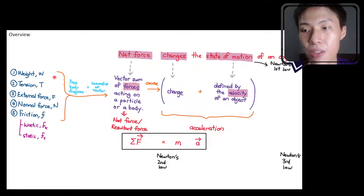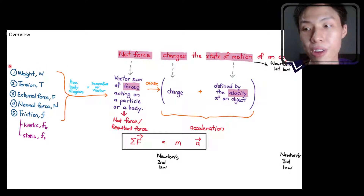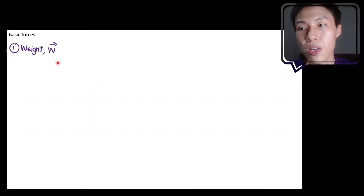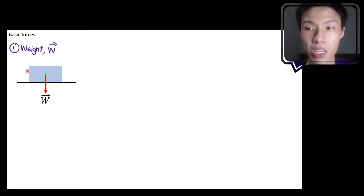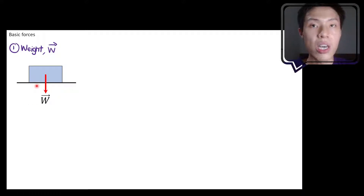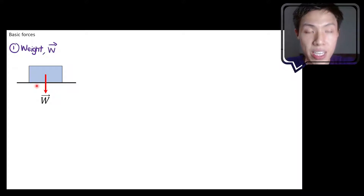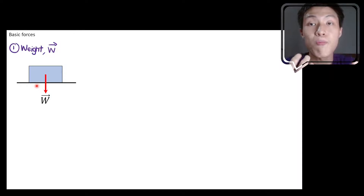In Chapter 4, we learn the five different types of forces that we can observe in a macroscopic situation. The first force is weight. Weight is the gravitational force that is exerted on an object. So if an object is being exerted with a gravitational force, that gravitational force experienced by the object will be called the weight.